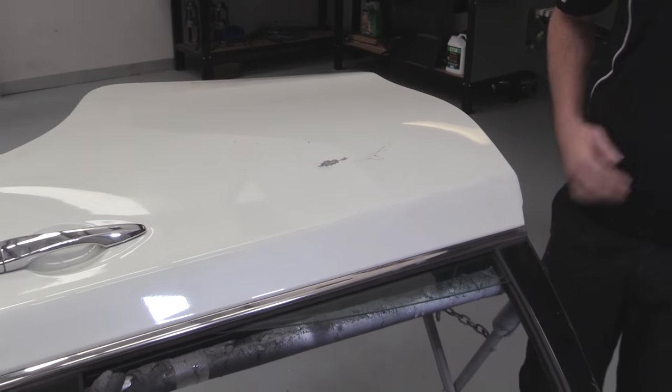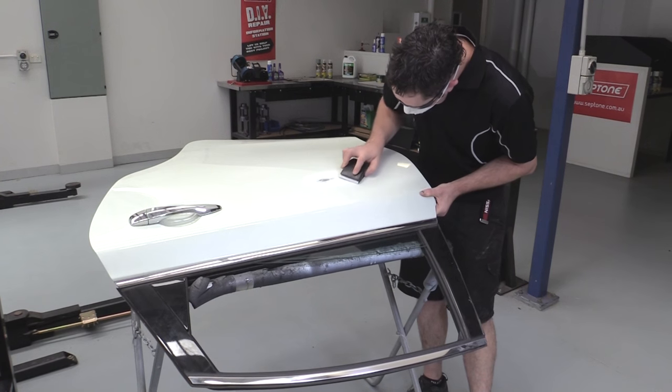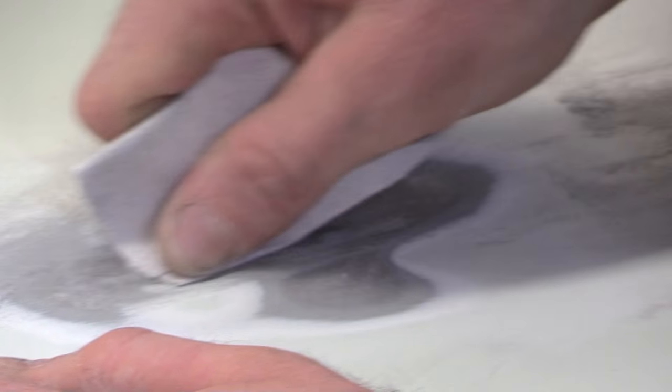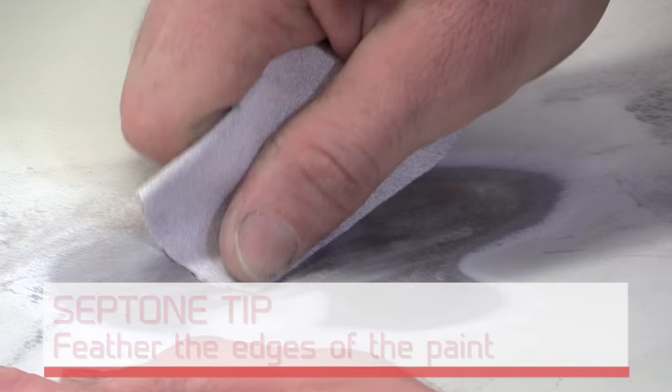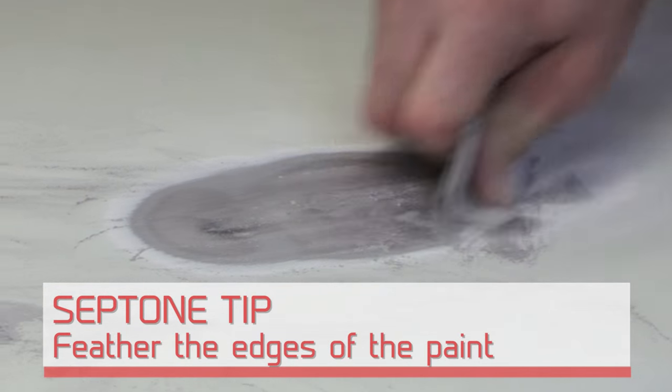Remove any paint from the repair area and surrounding area by roughly 50 millimeters using either a grinder or by hand with 40 to 60 grit sandpaper. Sand area to bare metal.